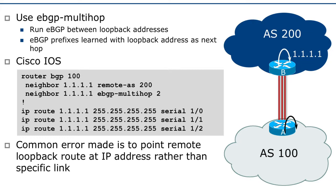This TTL value is very important. The biggest possible value is 255, but please don't be lazy and simply put 255 in there, because that will allow your eBGP session to be established up to 255 hops away. You could end up with an eBGP session going all the way around the world, rather than the direct link that you had hoped for.